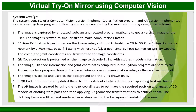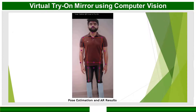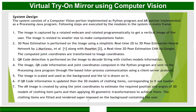After this, we give the image, QR code information, and joint coordinates to the Python program and Processing Java program through a file-based inter-process communication. The image is then scaled back to normal size and used as a background. The AR algorithm notices the difference between the actual clothing model and the angle and position of the joints, applies geometric transformation on the clothing model, and transforms it to the required angle and position.